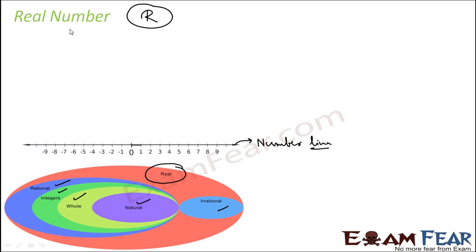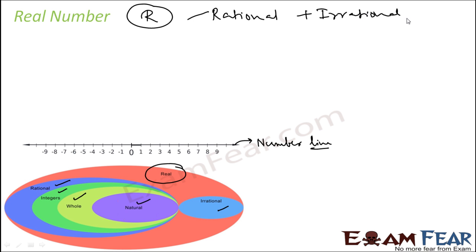Real numbers are denoted by R. Real numbers are nothing but both rational numbers and irrational numbers combined. Examples: irrational numbers like root 2, root 3, pi; rational numbers like minus 1, 0, 1/2, 3/2 — all these numbers which you can plot on the number line are real numbers. The definition of a real number is anything which you can plot on the number line.